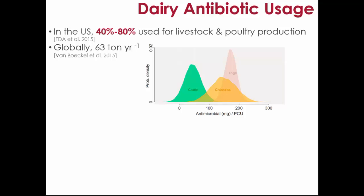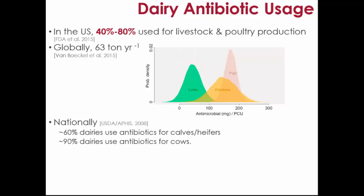There have been efforts to look globally at livestock use based on sales data and modeling. By and large, cattle and dairy seem to use less, while hogs and chickens use a bit more, but again we don't have good numbers. Nationally, about 60 percent of dairies are using antibiotics to treat young stock and heifers, and about 90 percent are using it on cows, often because of dry-off treatments.